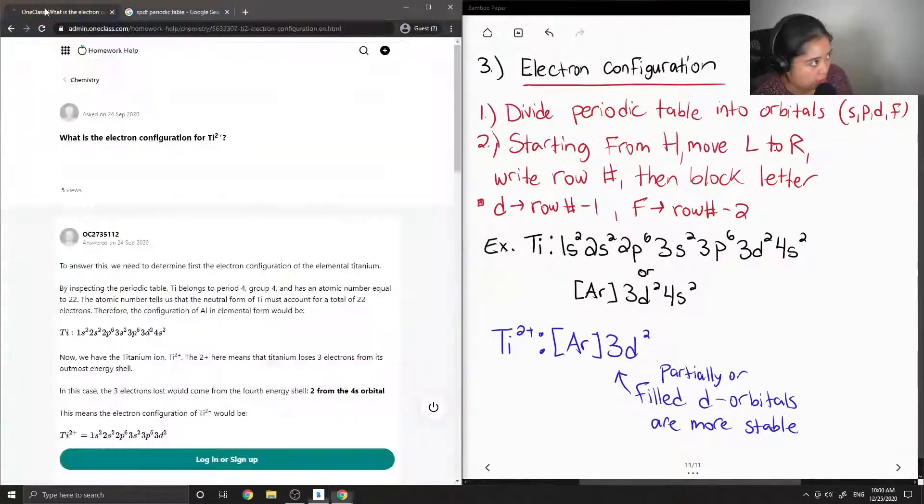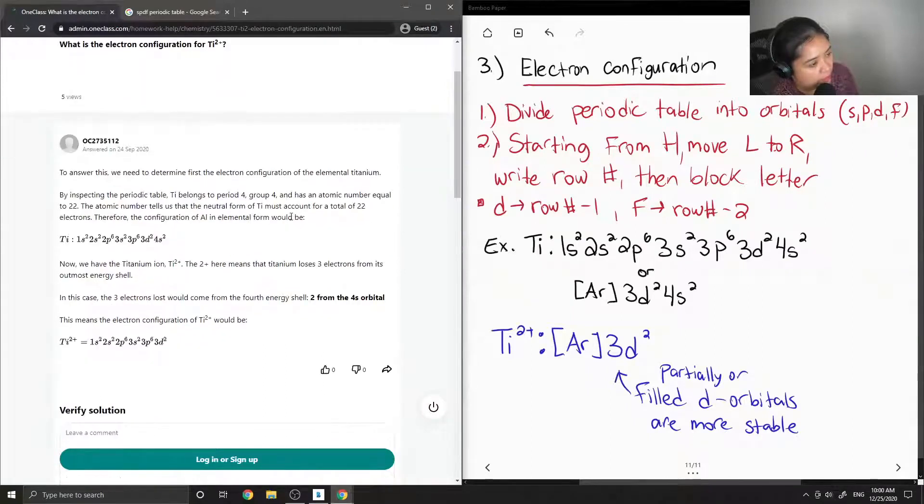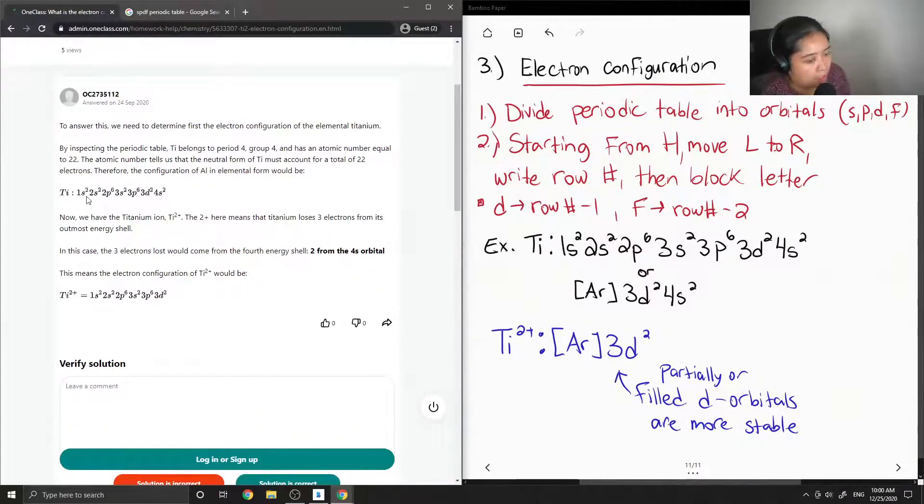Okay, so let's see what the tutor said. Okay, so to answer this we need to first determine the electron configuration of the elemental titanium. By inspecting the periodic table, titanium belongs to period 4 group 4 and has an atomic number equal to 22. The atomic number tells us that the neutral form of titanium must account for a total of 22 electrons. Therefore, the configuration, I think they mean to say titanium in elemental form, would be 1s2 2s2 2p6 3s2 3p6 3d2 4s2.